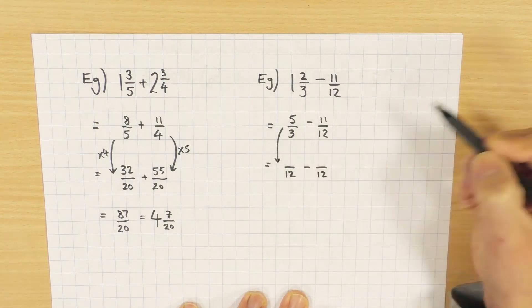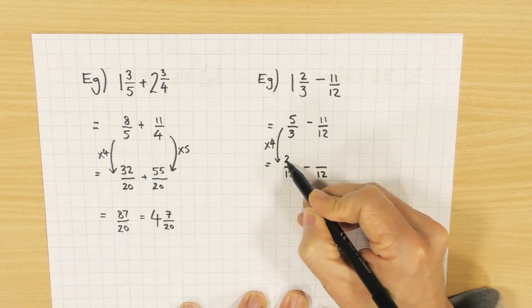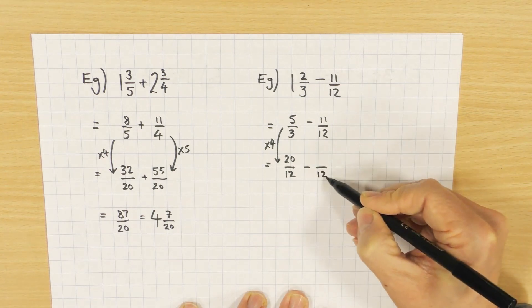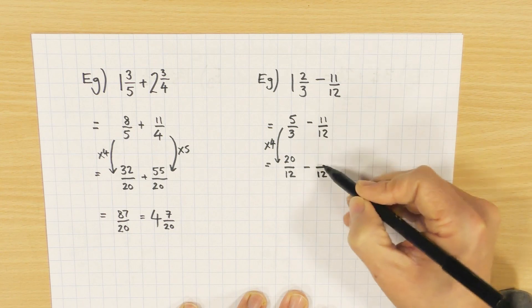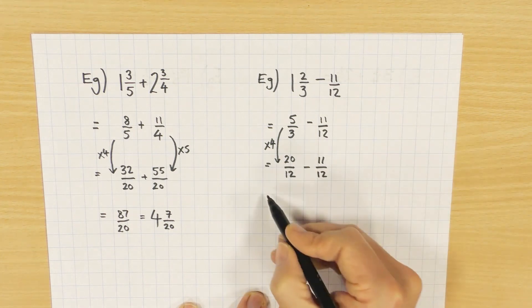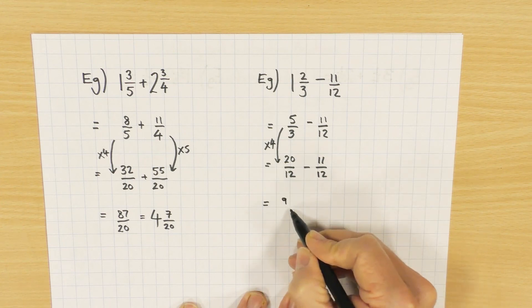What will I multiply the left hand fraction by? Four. Five times four, 20. This one's already out of 12, so I would only be timesing it by one, so no need to change it. 20 twelfths take away 11 twelfths, 9 twelfths.